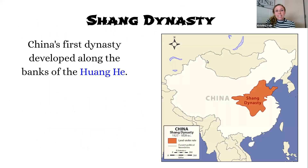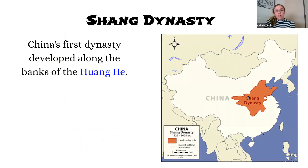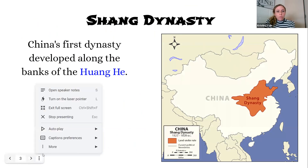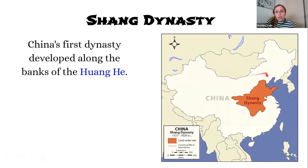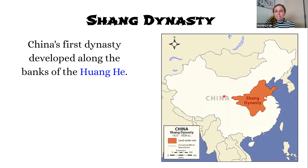Today's lesson is on the Shang Dynasty — it's pronounced 'Shang' like you hit a gong. China's very first dynasty is the Shang Dynasty, and it developed along the banks of the Huang Ha River, located in this area of China. The Shang Dynasty is by no means the entire extent of present-day China, but it is a fairly large area. We have to remember China is almost the size of the United States — a very large country.